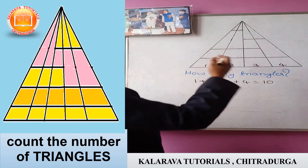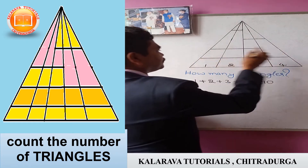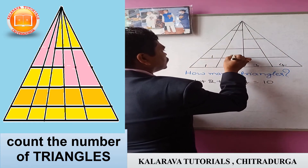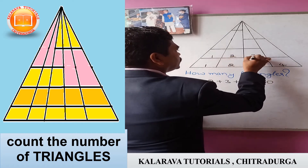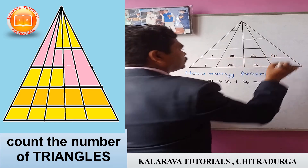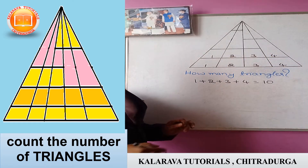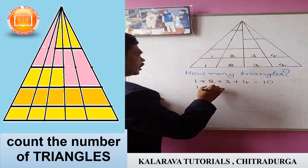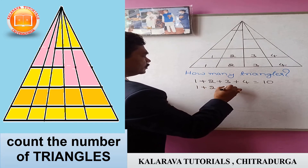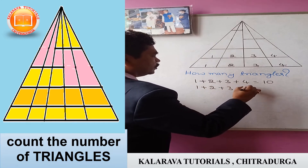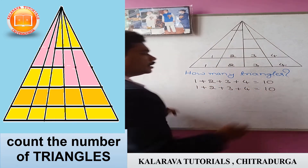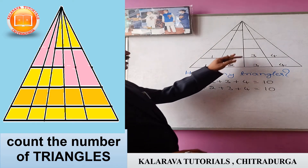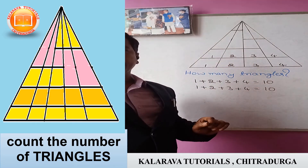Then you go to the next line. In this line also, you count the numbers: 1 plus 2 plus 3 plus 4. You have to add this one — you get 10. That means here 10 triangles, here 10 triangles.